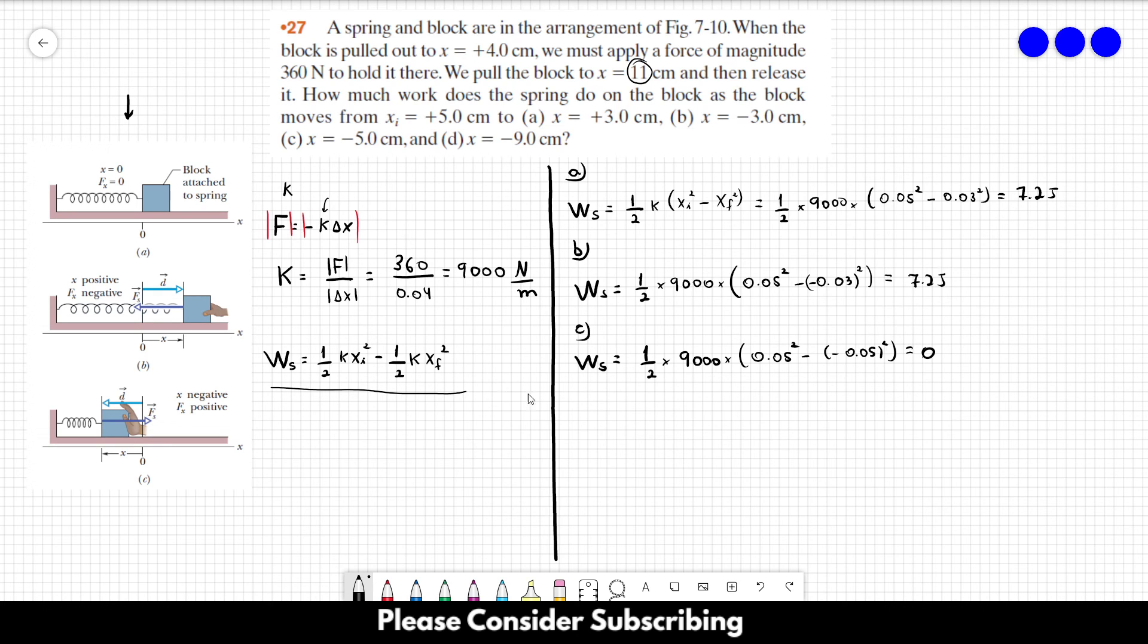For part D, the work done is 1/2 × 9000 × (0.05² - 0.09²), which gives us -25 joules. And that's it. You just apply the numbers to the equations. You don't have to think too much to solve this problem.